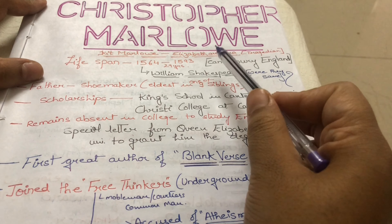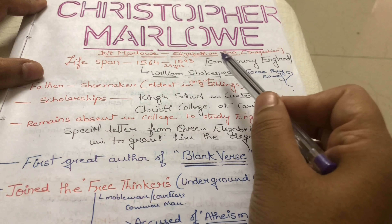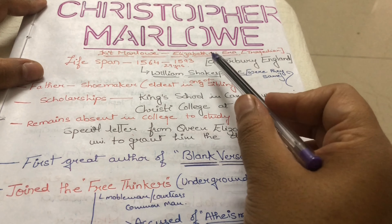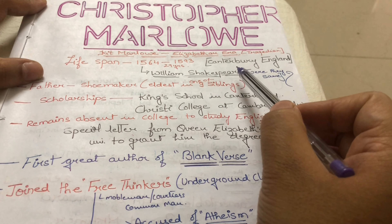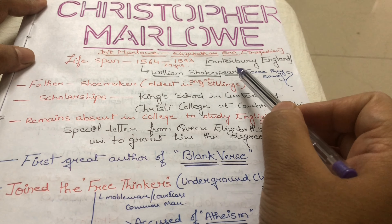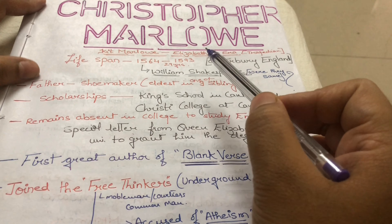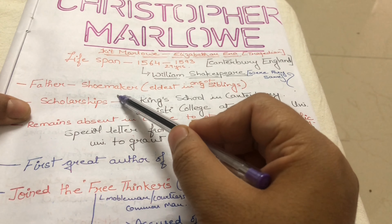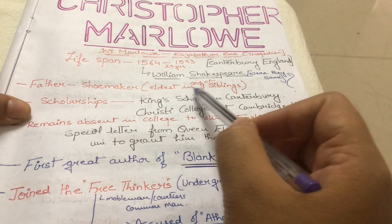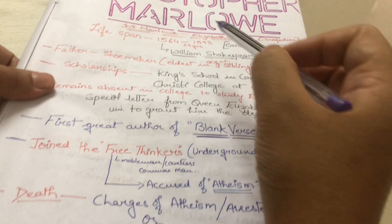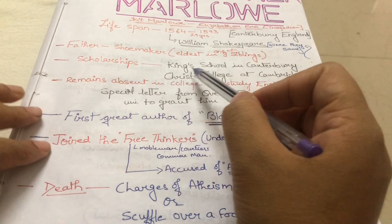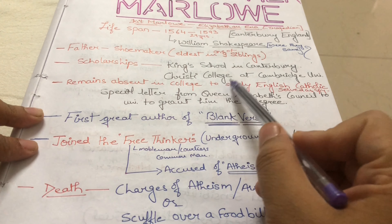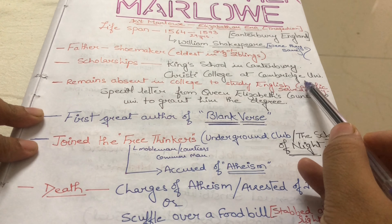The question is not clear whether they were the same person or not. But for our study, we treat Christopher Marlowe and William Shakespeare as two different identities. Christopher Marlowe's father was a shoemaker, and among nine brothers and sisters, Marlowe was the eldest. He studied at King's School in Canterbury and Christ's College at Cambridge University.